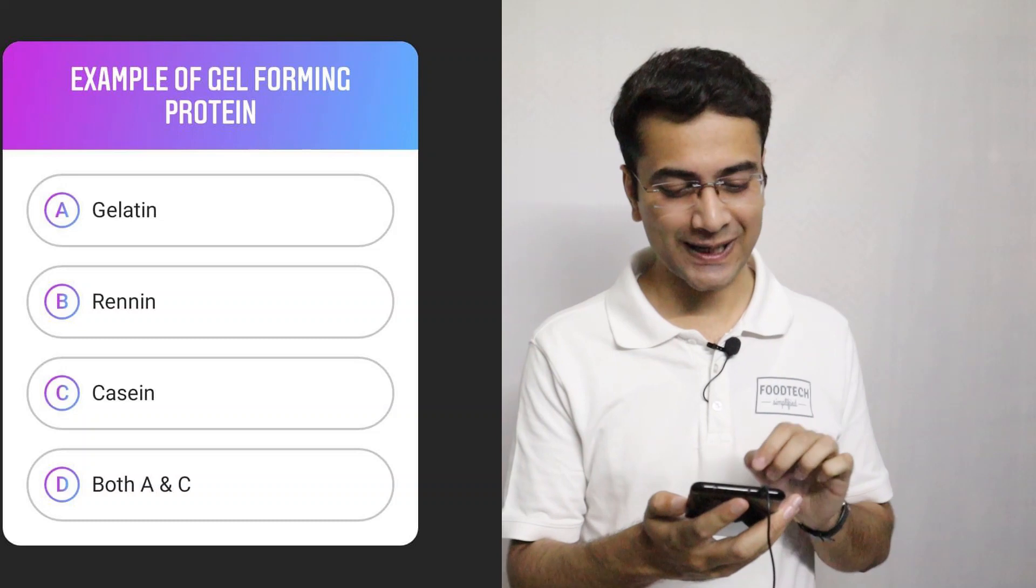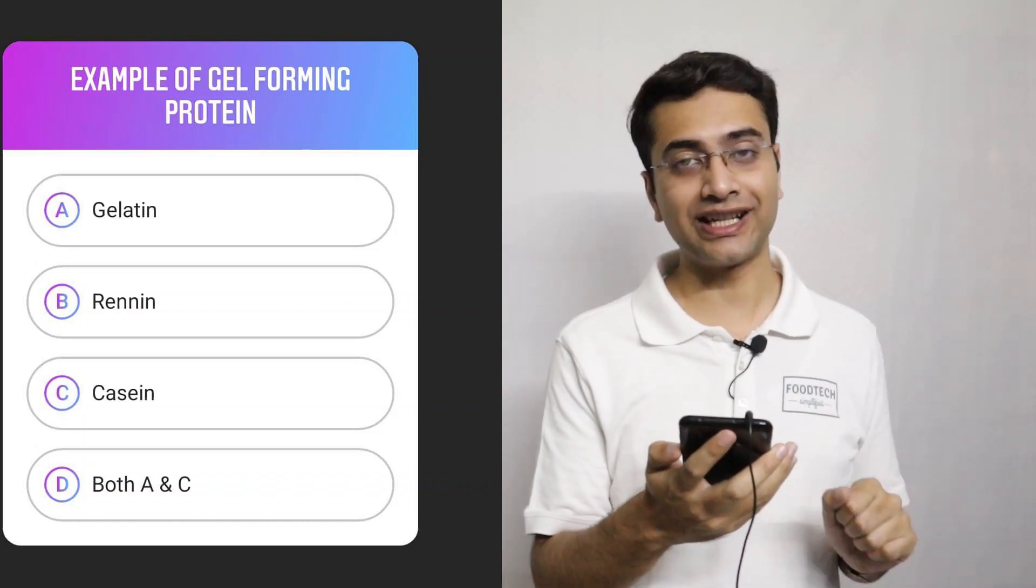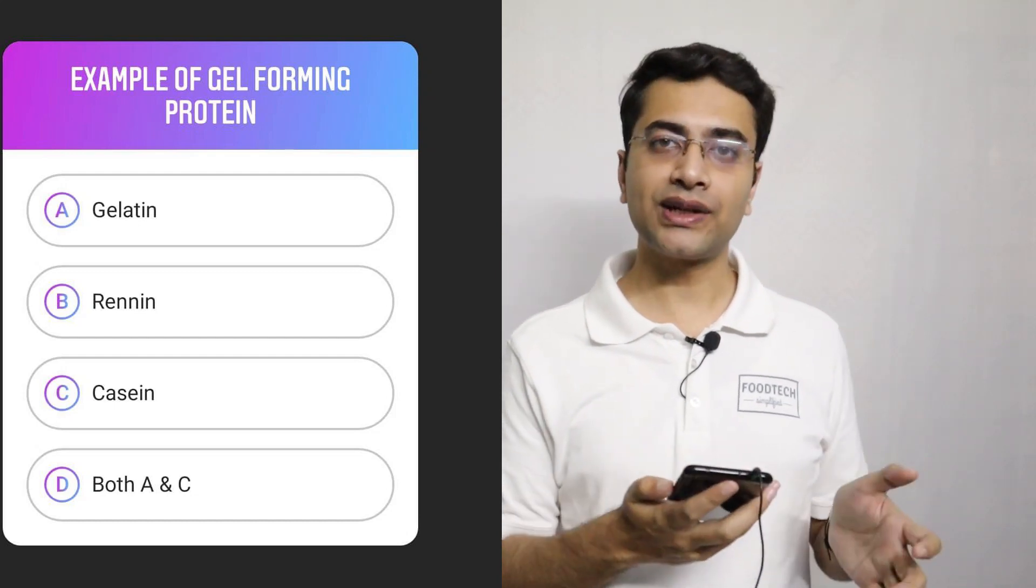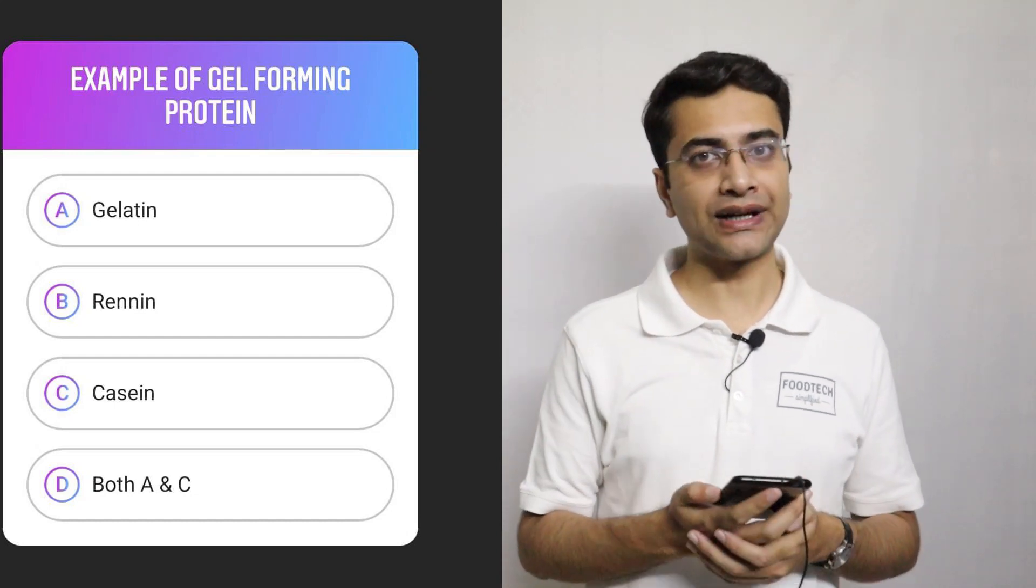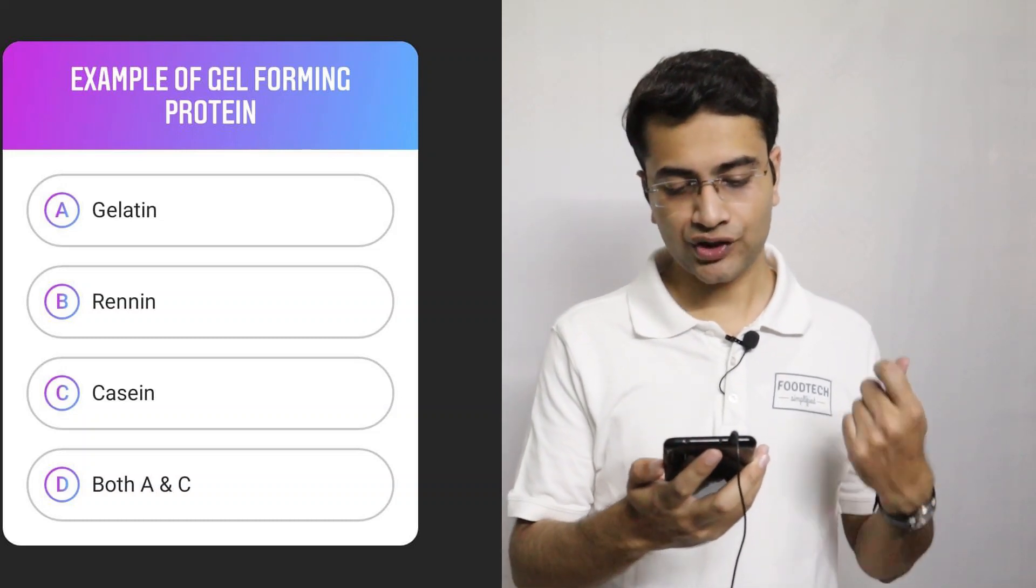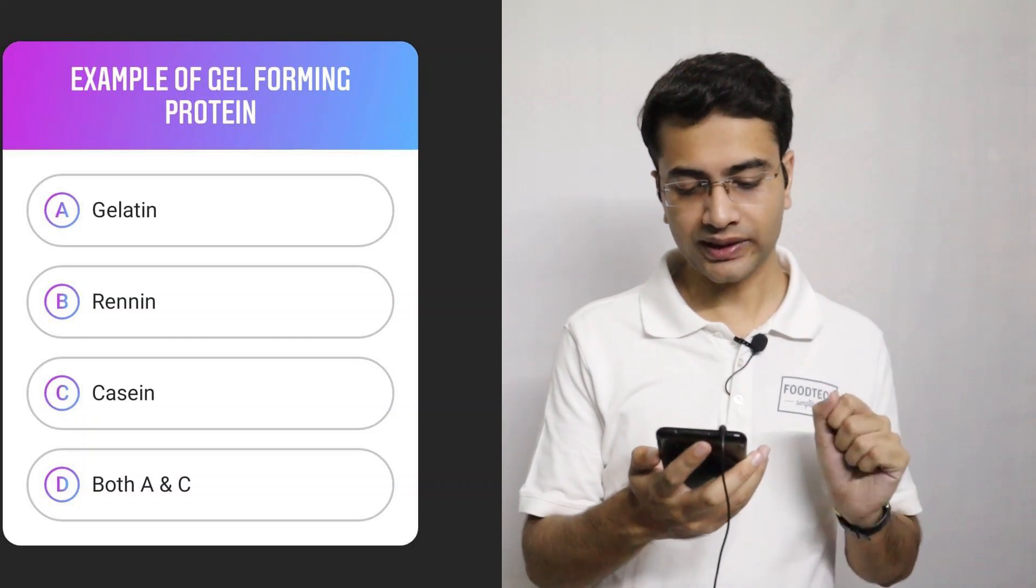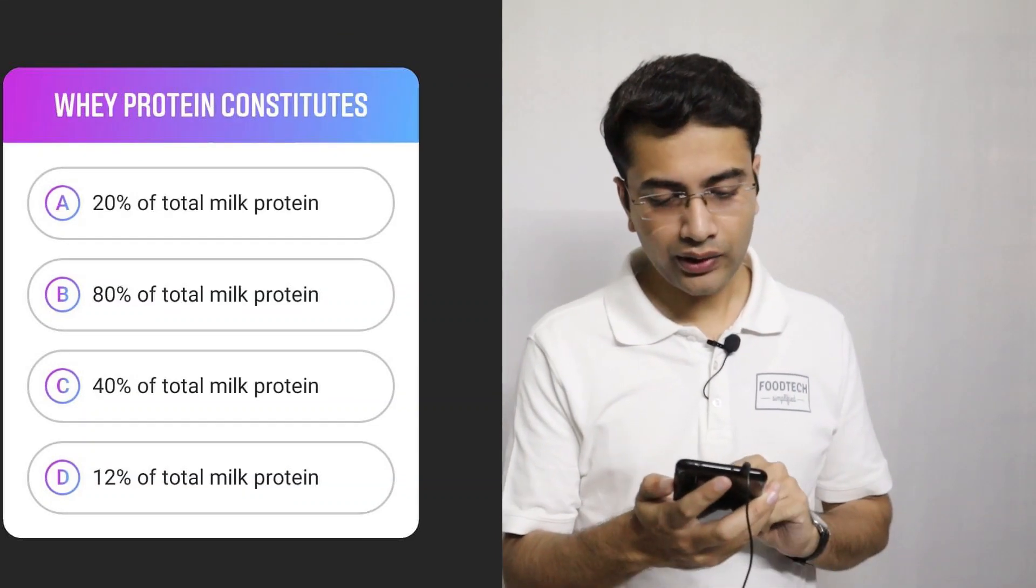Moving on to the next question, example of gel forming protein. Option A gelatin, option B renin, option C casein, option D both A and C. So there are some proteins that have a property to form a gel. So renin does not have that property, but gelatin and casein have that property. They exhibit gel forming. So both A and C, option D is the correct answer.